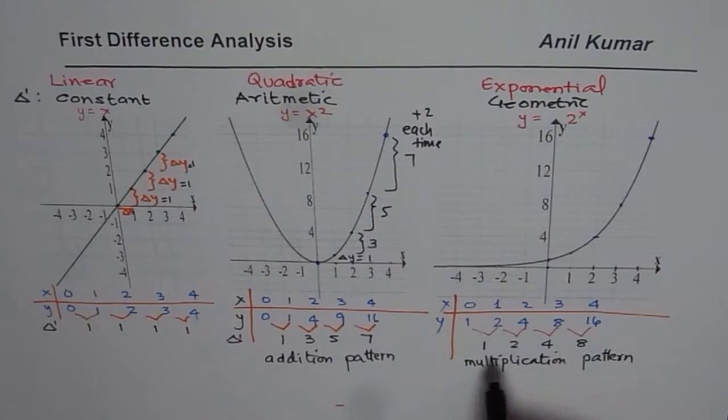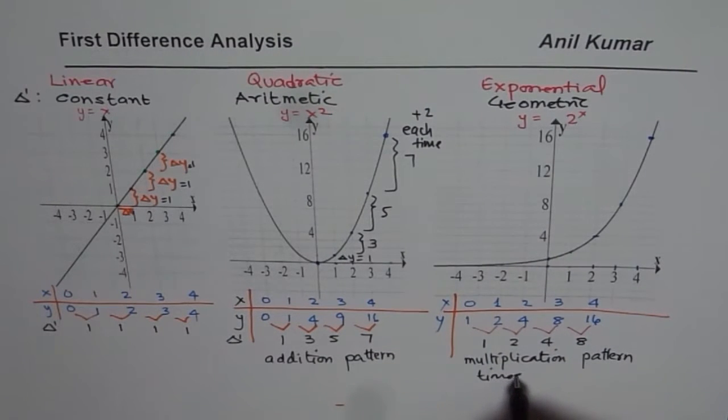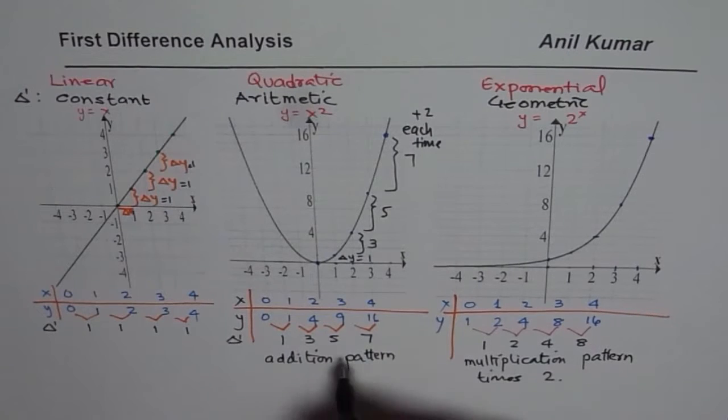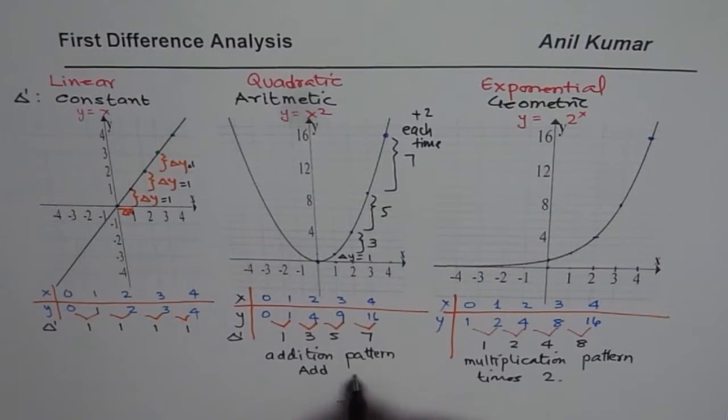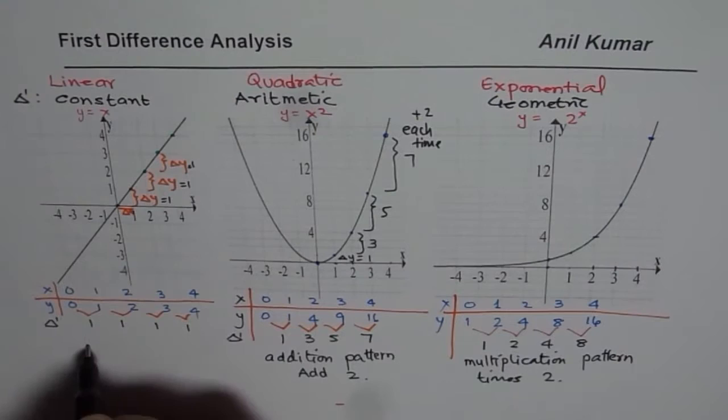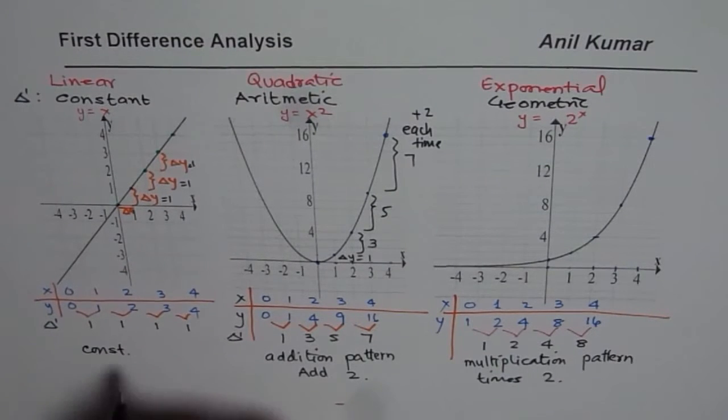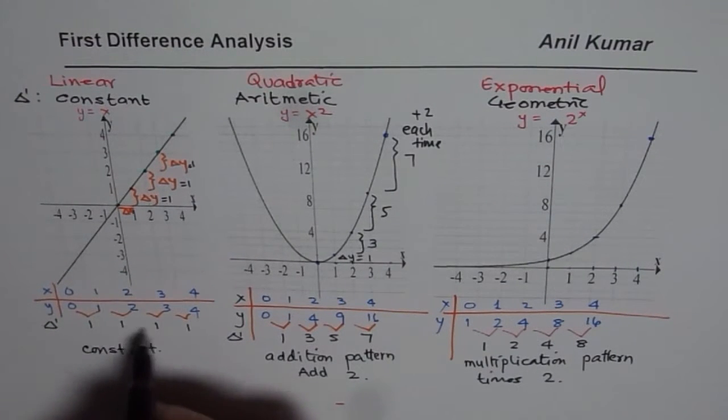Since it is base 2, we have times 2 each time. So it is times 2. So this time, it is times 2. Earlier, it was add 2, and in this case, it was constant. Same, just 1.